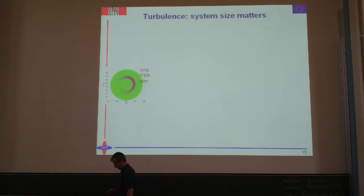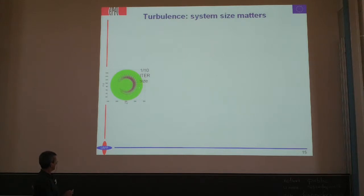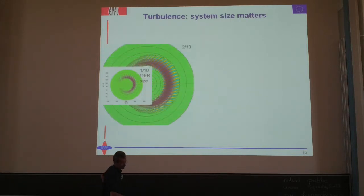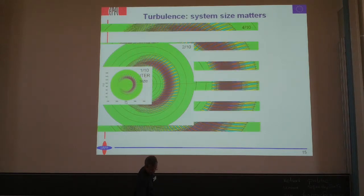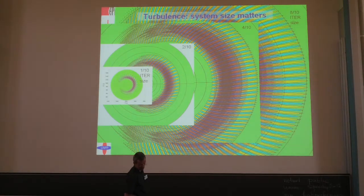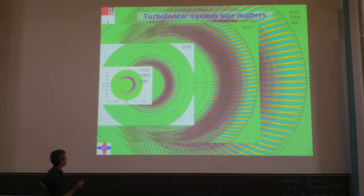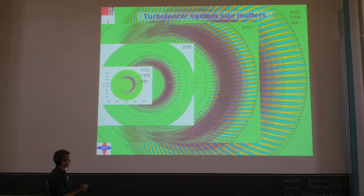About system size now: here is a contour plot of some instability in a cross-section of the plasma, with the center roughly at center. There is an instability developing, and here we have done the simulation at one-tenth of the size of ITER, then two-tenths, then four-tenths, and then 80% of the ITER size. What you see on these plots is that the basic size of the instability is more or less invariant — the figures are approximately to scale. This means the larger the system size, the more grid points and the more particles you will need.